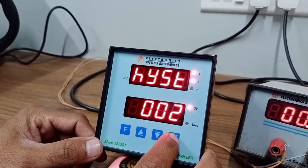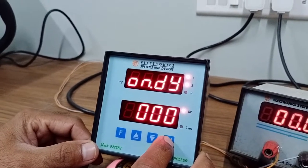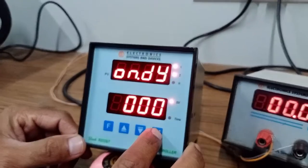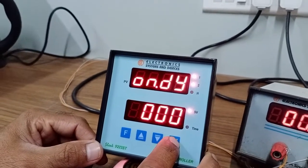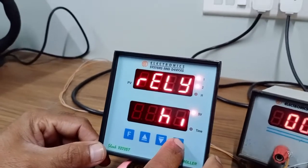Hysteresis which is minimum of 2 degrees and on delay if you need on delay which is in seconds you can program it from 0 to 4 minutes to 40 seconds. Relay logic high low.